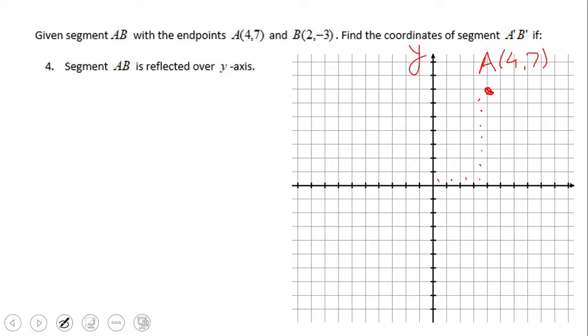And that is the y-axis. So basically now we're just going to count how far away point A is from the y-axis, which is four units away, of course, because the x was 4. We're going to move four units away to the left to get the point A prime. Whoops, wrong. Negative four and seven.